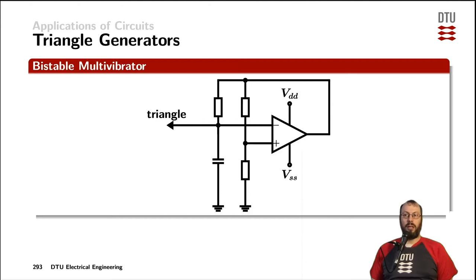The exact same circuit can be used in a different way and is then called a bistable multivibrator. In that case, instead of applying another input here, we use the capacitor voltage as the output and call that a triangular oscillator. Now, the output of that circuit is a triangle.